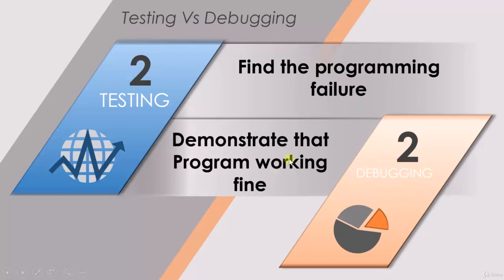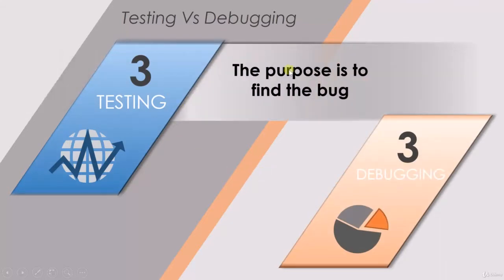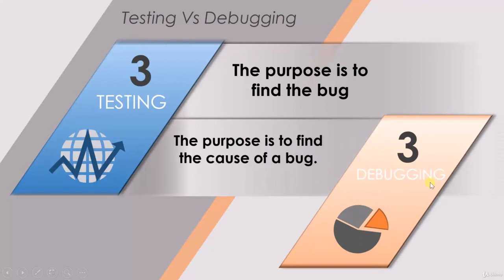Coming to the third and last point: the purpose of testing is to find the bug — that is very clear, we have to find the bug when doing a testing activity. Whereas when doing a debugging activity, the purpose is to find the cause of the bug. So here we are not just finding the bug, but finding what caused this particular bug.